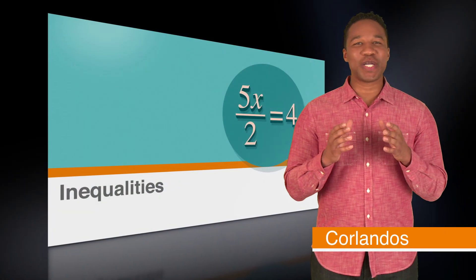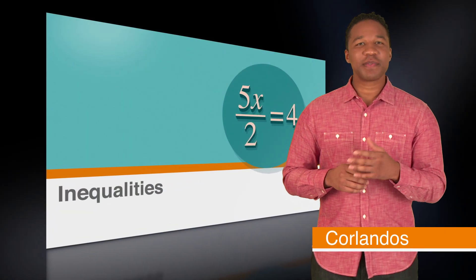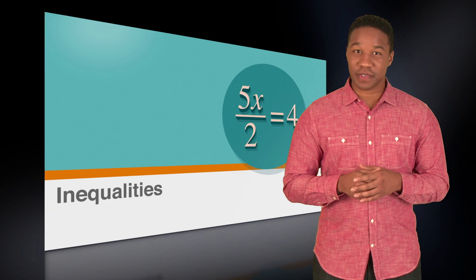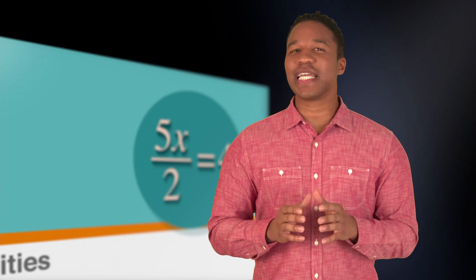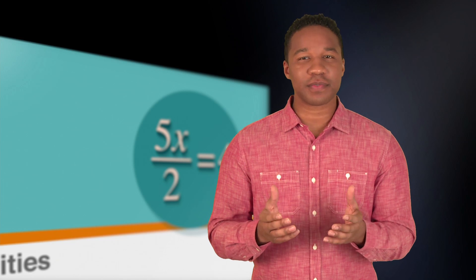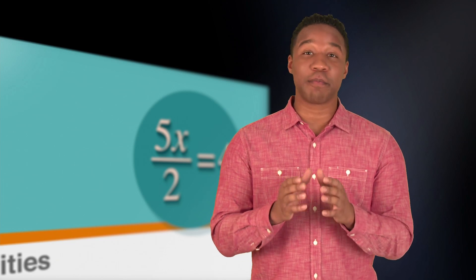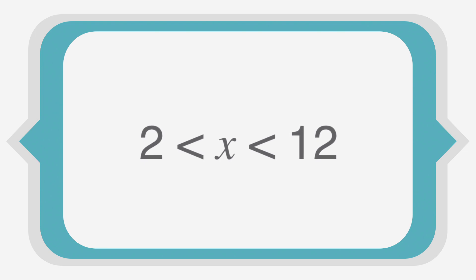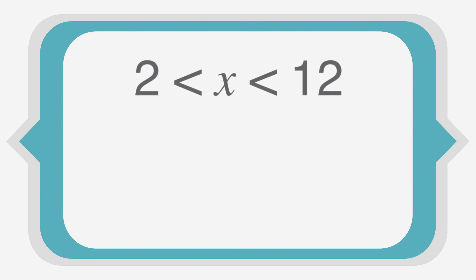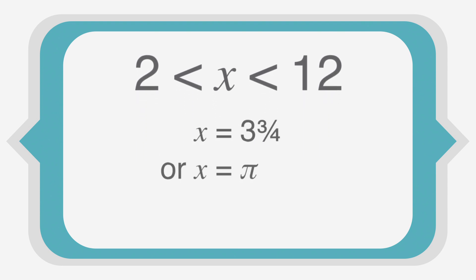Today we're going to talk about inequalities — the problems that have the arrowhead going in one direction for less than and the other direction for greater than. An inequality is a way of providing a set of numbers without mentioning every single number in the set. So if you see '2 is less than x is less than 12,' that's a way of saying that x can be anything between 2 and 12 — a fraction, an irrational number, a rational number, or whatever, as long as it's between 2 and 12.